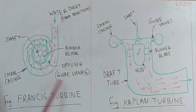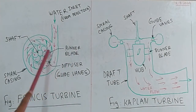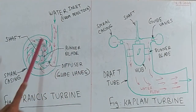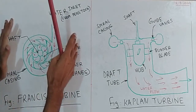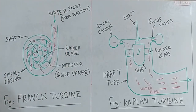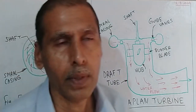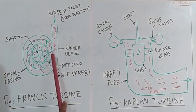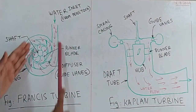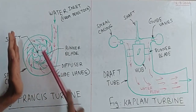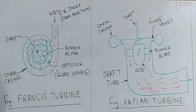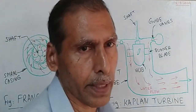This is the Francis turbine. Its main parts are the runner blade, diffuser, and spiral casing. The spiral casing is completely enclosed. The Francis turbine is a radial flow turbine.